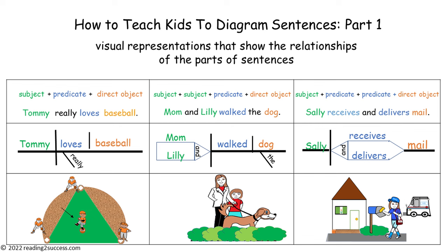The three diagrams are: 1. Subject, Predicate, and Direct Object. 2. Compound Subject, Predicate, and Direct Object. And 3. Subject, Compound Predicate, and Direct Object.